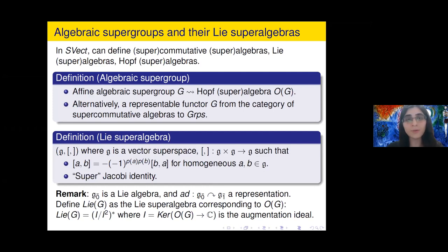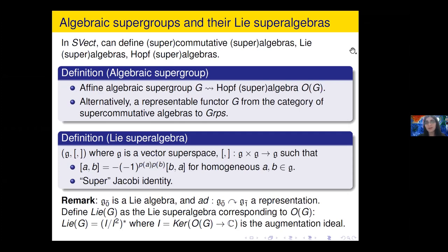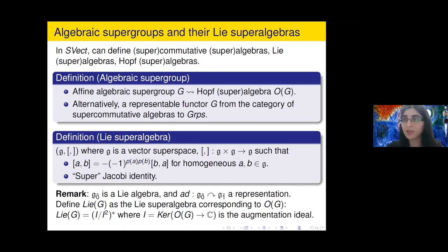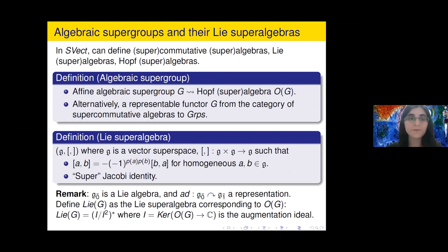What is an algebraic supergroup? We have two equivalent definitions. One uses Hopf superalgebras: to every Hopf superalgebra we define a corresponding affine algebraic supergroup as its spectrum, so the category of affine algebraic supergroups is opposite to the category of Hopf superalgebras. Alternatively, we can define an algebraic supergroup as a representable functor from the category of supercommutative algebras to groups.